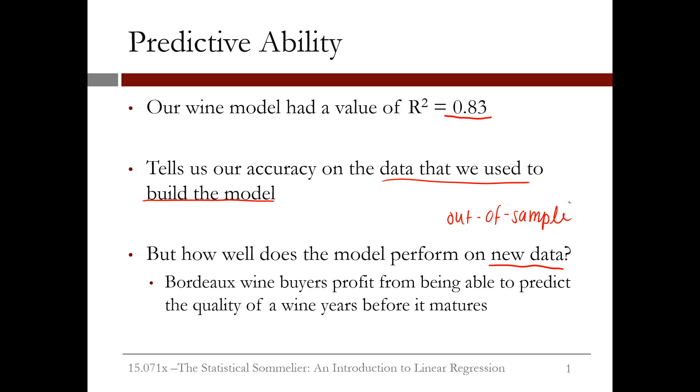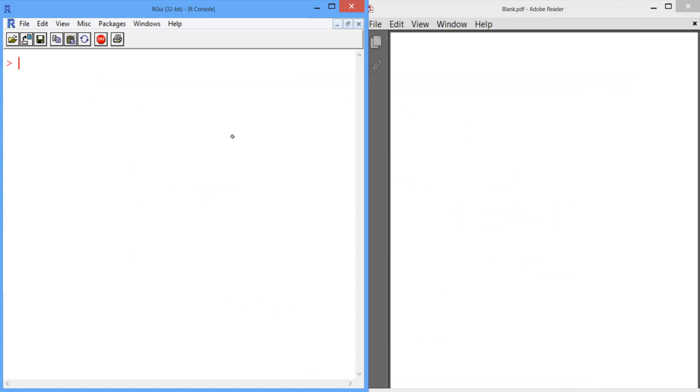Let's see how well our model performs on some test data in R. We have two data points that we did not use to build our model in the file wineTest.csv. Let's load this new data file into R. We'll call it wineTest and use the read.csv function to read in the data file wine_test.csv.